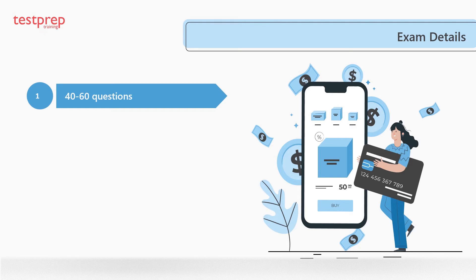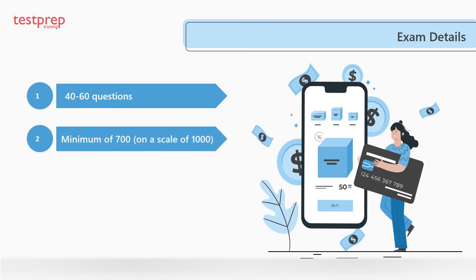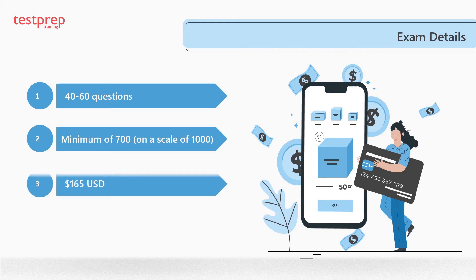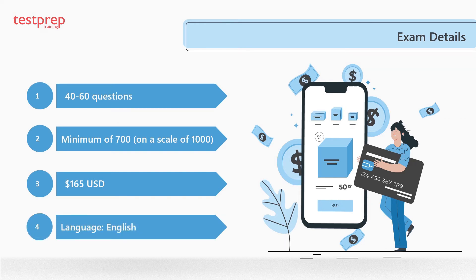The Microsoft Power Platform Solution Architect exam will have 40 to 60 questions, which can be of types such as case study, short answers, multiple choice, mark review, drag and drop, and others. To pass the exam, candidates must score a minimum of 700 on a scale of 1000. The Microsoft PL-600 exam costs 165 US dollars including additional taxes, and candidates can take the exam in the English language.